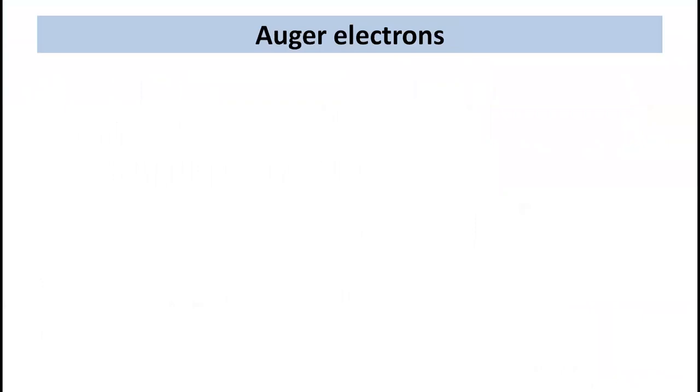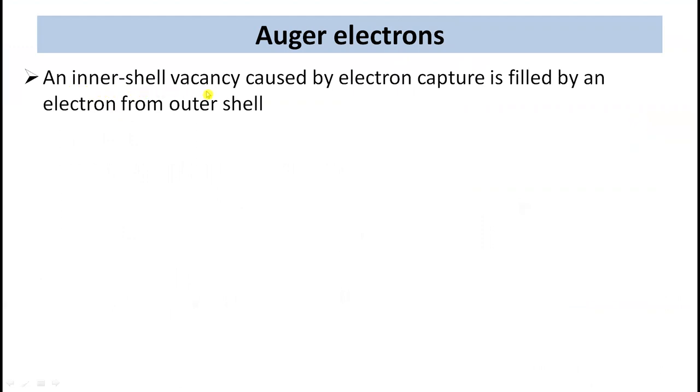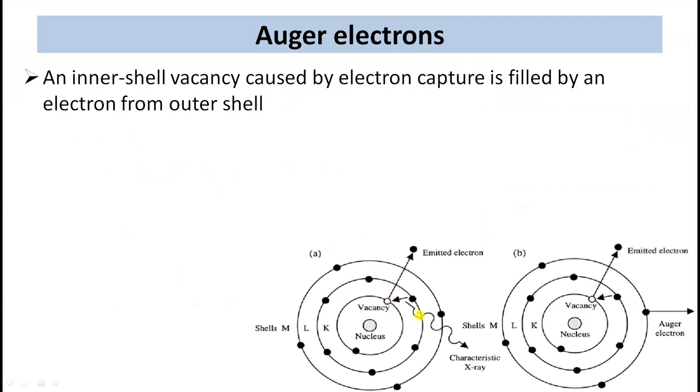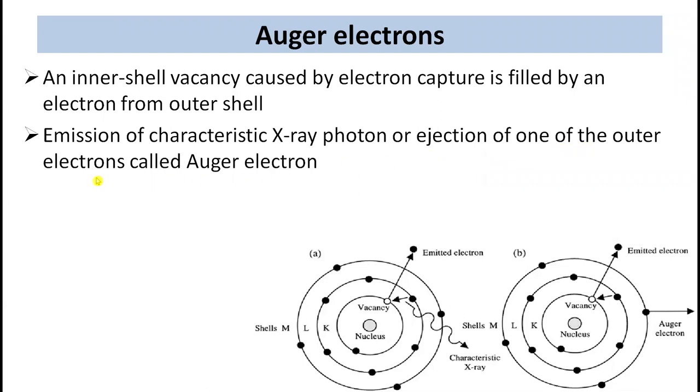Auger electrons: an inner shell vacancy caused by electron capture is filled by an electron from outer shell. This can lead to emission of a characteristic X-ray or ejection of one of the outer electrons called Auger electron. An Auger electron appears with an energy given by the difference between the original atomic excitation energy and the binding energy of the shell from which the electron was ejected.